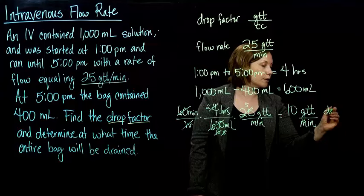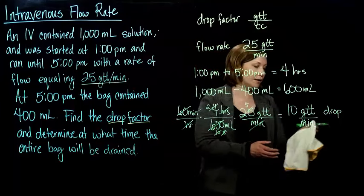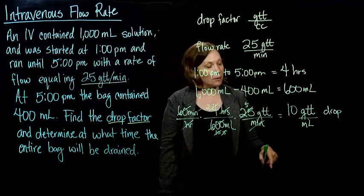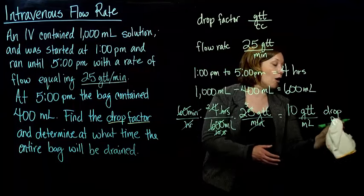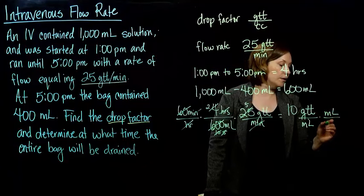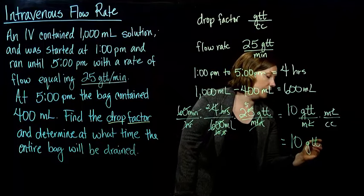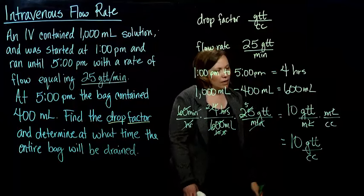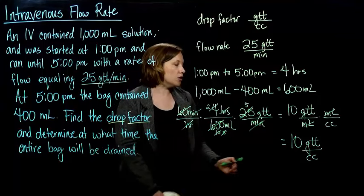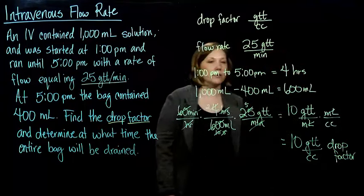So we're almost there. We have our drop factor. Wait, that's not the drop factor. So 10 drops per milliliter. This is our drop, or almost our drop factor, I guess I should say. We know that 1 milliliter per cc, our milliliters cancel. We have 10 drops per cc. For our purposes, it's actually easier to leave it as milliliters, because we're just going to convert it back to milliliters to begin with. But they'll want to know the drop factor in drops per cc.